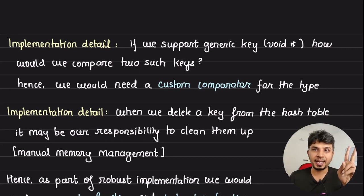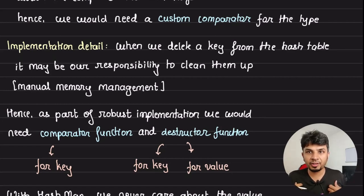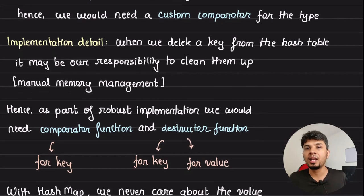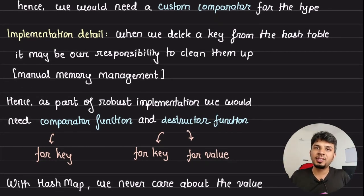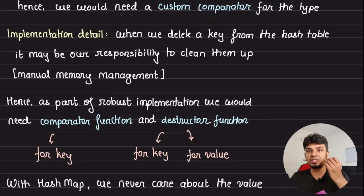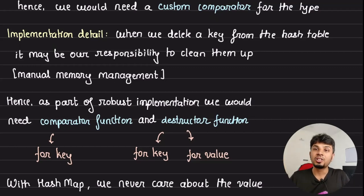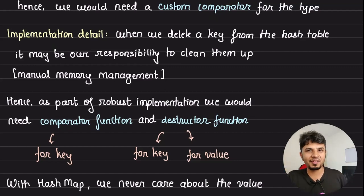A second implementation detail: when we delete a key from the hash table, it may be our responsibility to clean it up. It might be the last reference of the key-value pair in our hash map. For a robust implementation, we need to also accept destructor functions — a destructor for the key and a destructor for the value. For example, if you're using a language with manual memory management and that is the final reference, we invoke the destructor function when we permanently delete the key. This is a critical micro-implementation detail to avoid memory leaks.